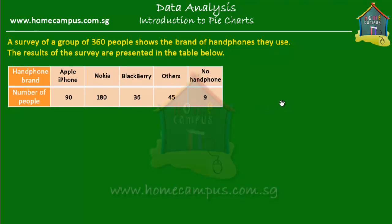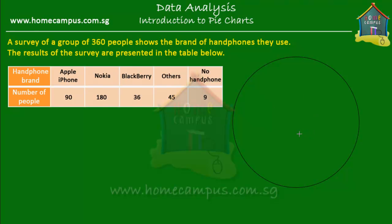Now we'll make a pie chart using this table. A pie chart is a circle graph, so we start by making a circle. This circle stands for the whole group of 360 people surveyed. One way of marking the data is to cut up this pie into 360 slices and mark 90 as iPhone users, 180 as Nokia users and so on — but that would be too much work. The easier way is to find what fraction of the whole group each brand represents.